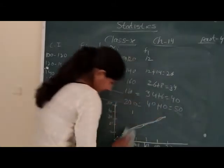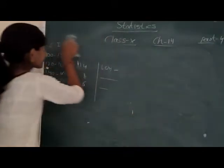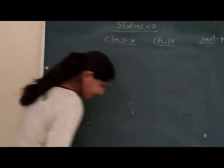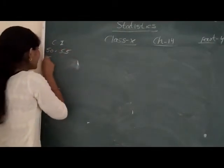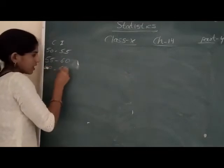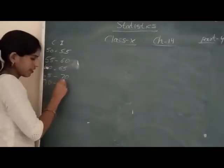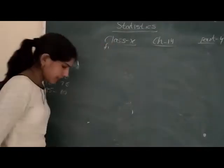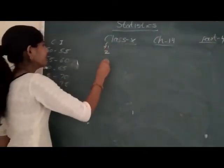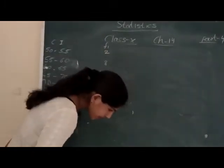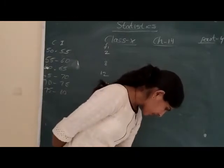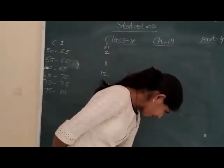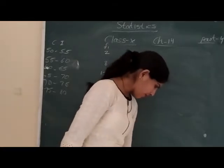Our class interval given is 50 to 55, 55 to 60, 60 to 65, 65 to 70, 70 to 75, and 75 to 80. And the frequencies are 2, 8, 12, 24, 38, and 16. Okay? So what do we need to make? See, in this the statement given says this total is hundred.